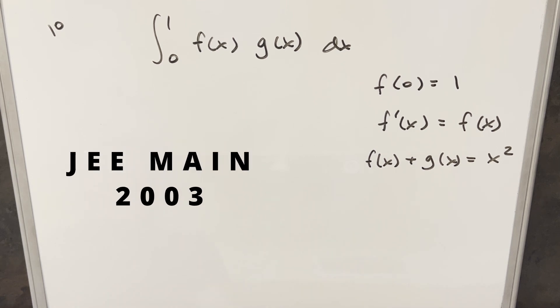Okay, we're doing another integral. This one's from JE Main 2003. We have the integral from 0 to 1 of f(x) times g(x) dx, and we're given all these conditions over here to the right.